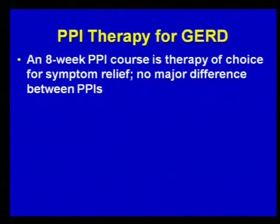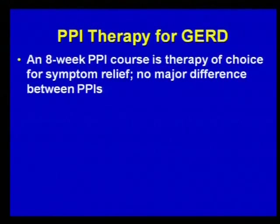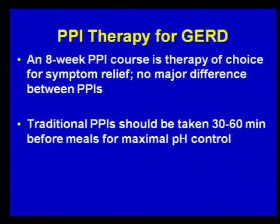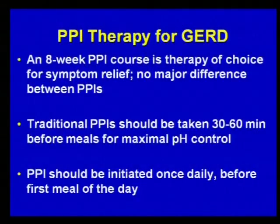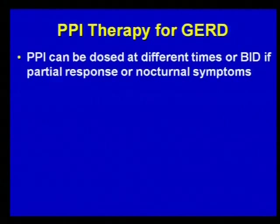Taking PPIs 30 to 60 minutes before meals allows for maximum control. If a patient hasn't responded to a PPI trial, the first important thing is to make sure they're taking their medication accurately — once a day before the first meal. If a patient says they're never a breakfast eater, or all their symptoms occur at night, you can certainly do that once-daily PPI trial with the dose before the evening or lunch meal as appropriate.